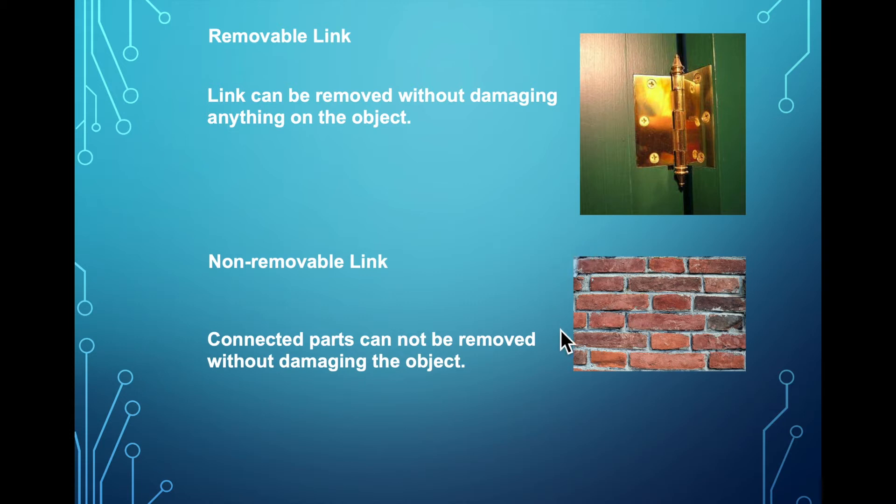If it's non-removable, that means that you're going to break the object if you try to remove the actual link. So if I remove the cement here, or if it chips away over time, it starts chipping away, the bricks might fall off. And that's because you've removed the link between the various bricks. So you cannot remove the link, or if you do remove the link, it's going to break your object. So in this case, we'd call it non-removable.